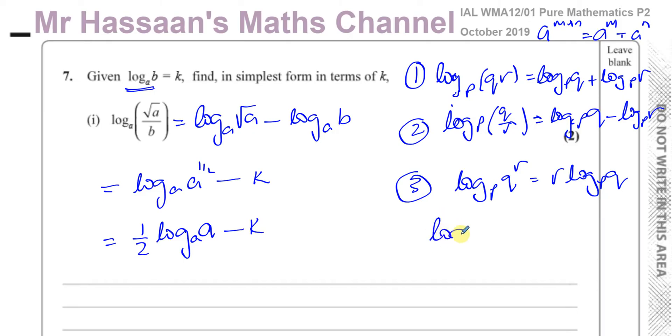Now, log to the base A of A is equal to 1. When you have log to the base A of B equals C, what it means is A to the power of C equals B. So A to the power of something equals A, well, it must be a 1. So the log to the base of anything of itself will always be 1. So this is going to be a half minus K. This here on the side is not the actual working for the question, it's just some of the reasoning behind what I've done here. But this is the actual working for the question, and that's perfectly fine. So that's the answer to 7 part 1, a pretty simple question actually.